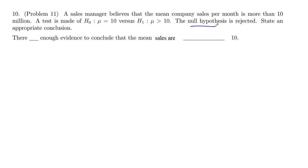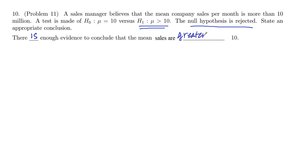The null hypothesis is rejected. That means we're going to conclude the alternative hypothesis is true. When stating a conclusion, your conclusion always refers to the alternative hypothesis. So we would say there is enough evidence to conclude that mean sales are greater than 10, because that is what the alternative is.